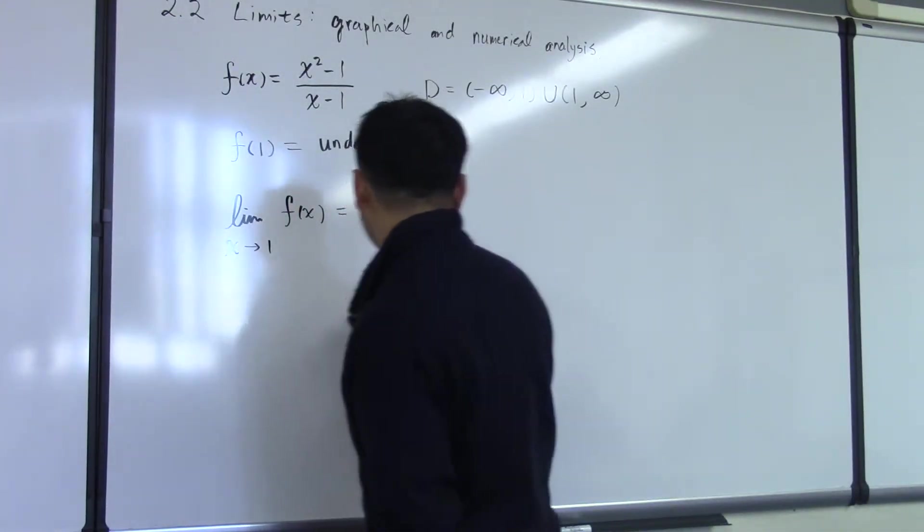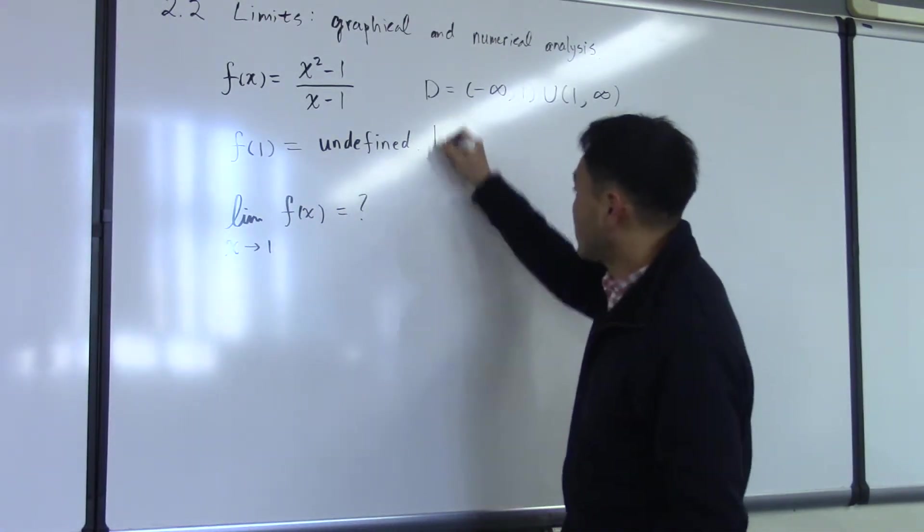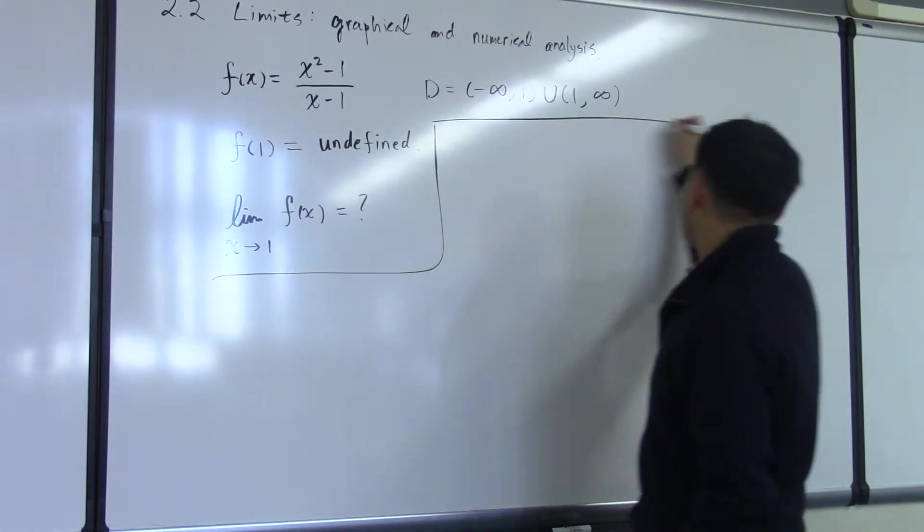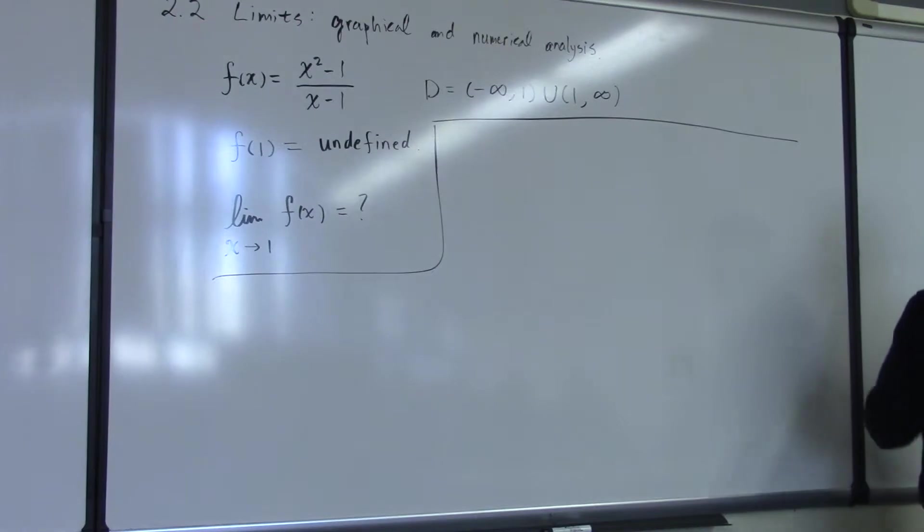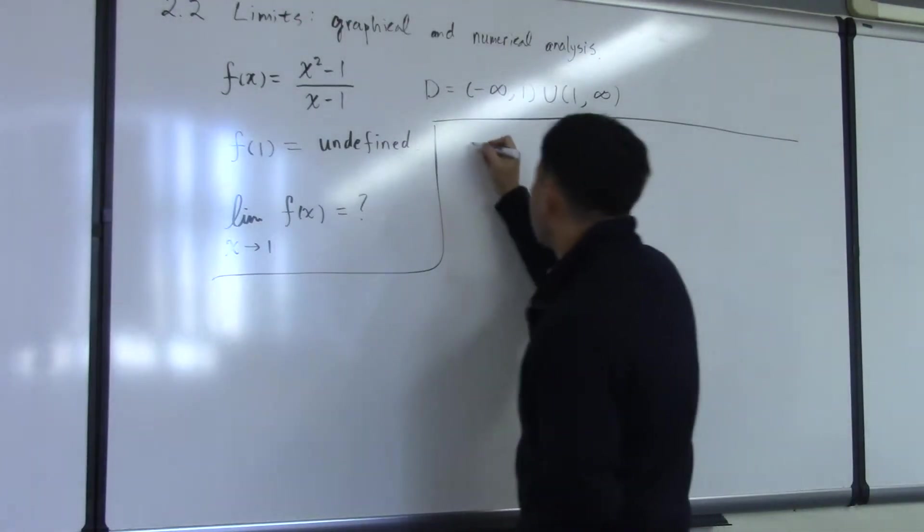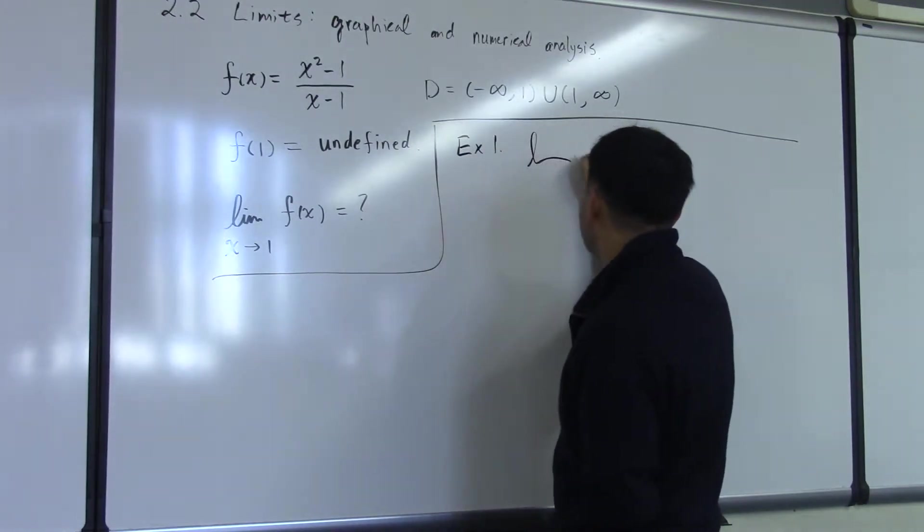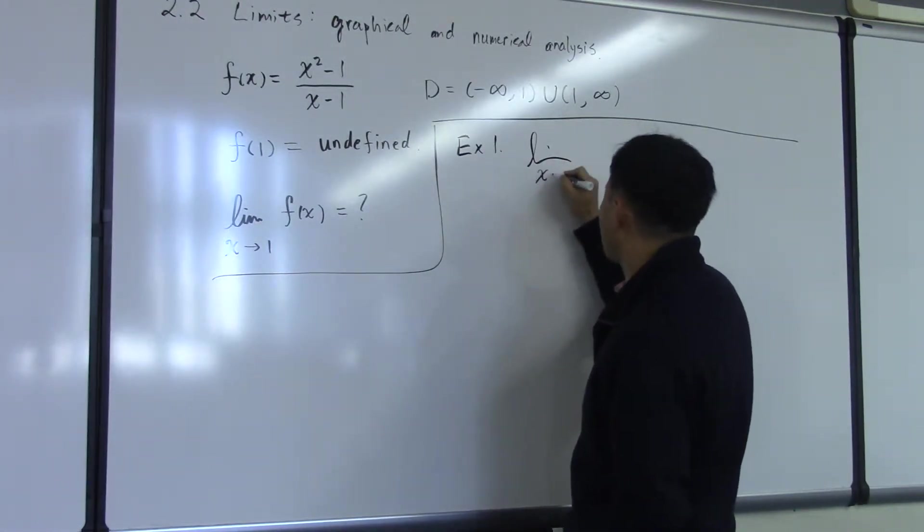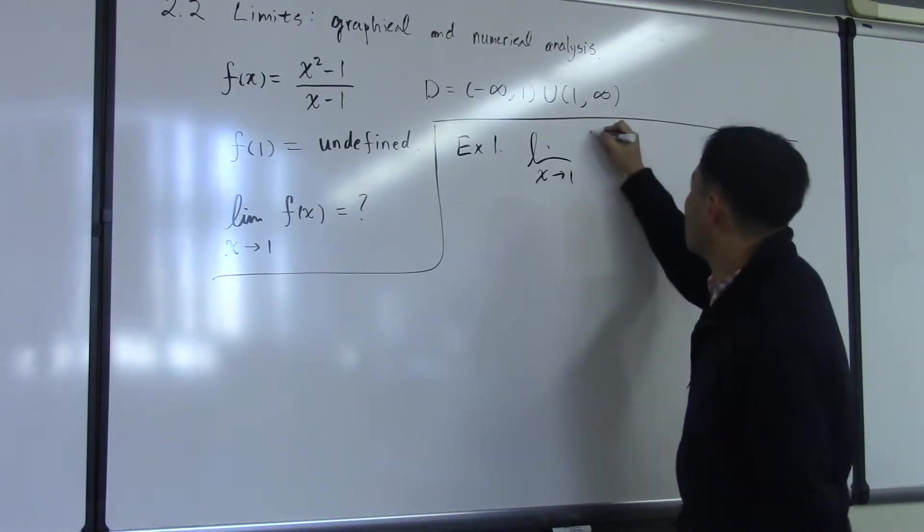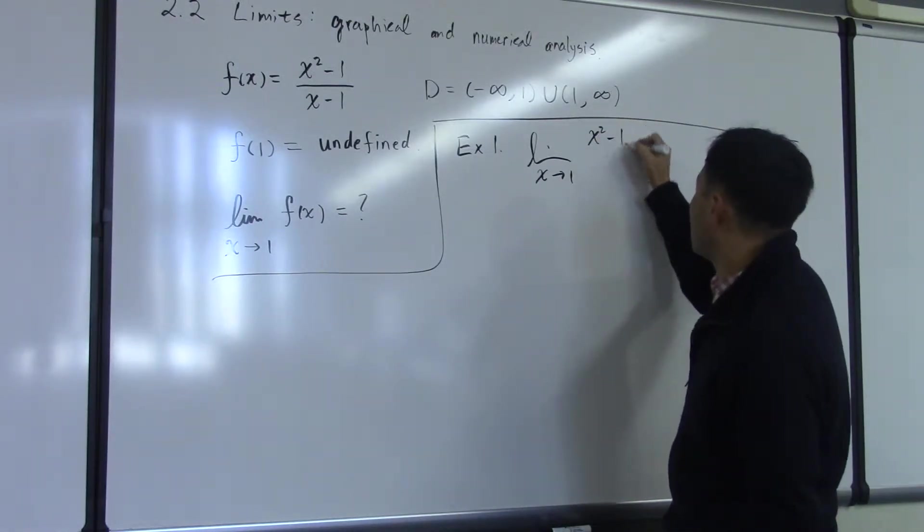So let me actually write in an exercise for that. So the first example we are going to investigate is limit x going to 1 of x squared minus 1 over x minus 1.